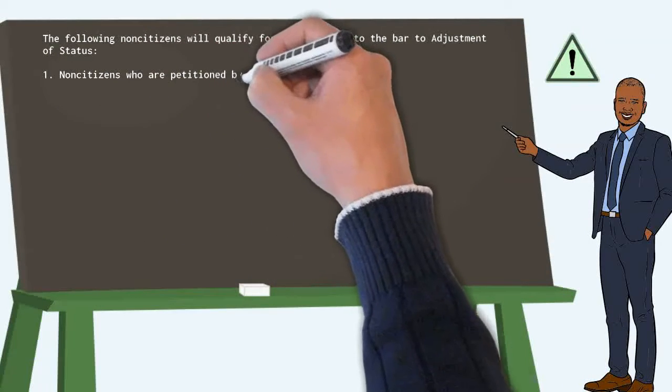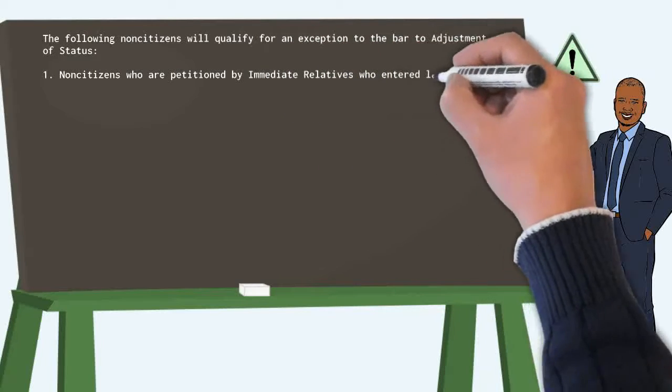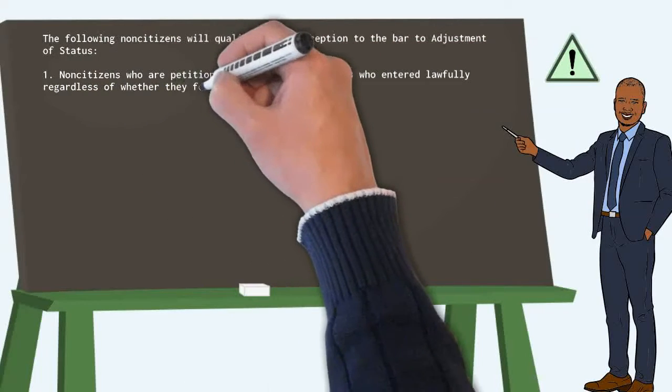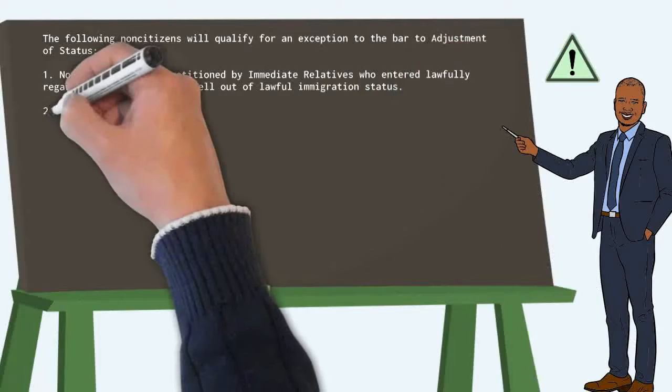One: Non-citizens who are petitioned by immediate relatives who entered lawfully regardless of whether they fell out of lawful immigration status.